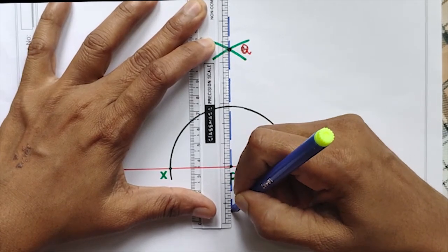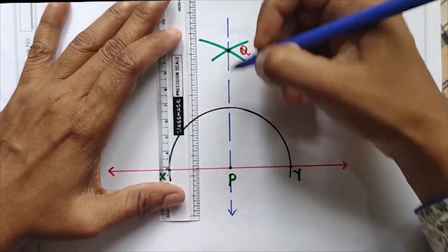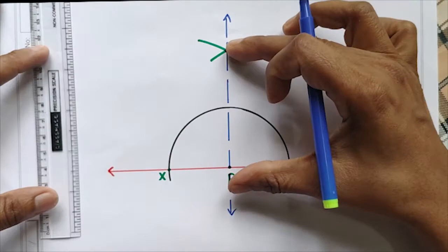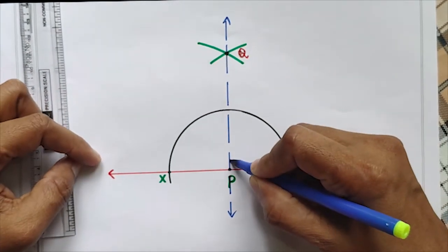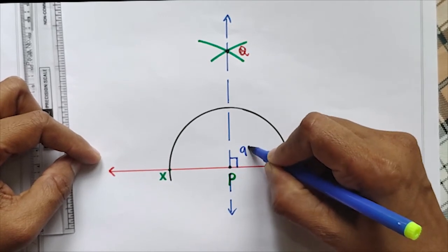Or you can extend it, no problem. So the line PQ is perpendicular to XY. That means here the angle will be 90 degrees.